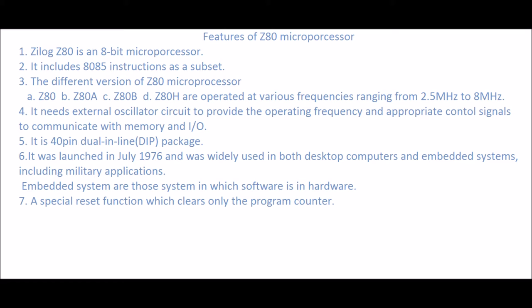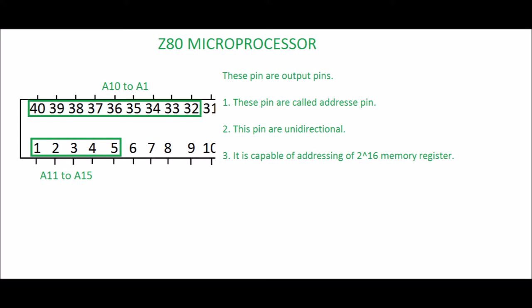A special reset function which clears only the program counter. Pins 1 to 5 (A11 to A15) and pins 31 to 40 (A1 to A10) are output pins called address pins. These are used to carry the address of memory registers and I/O input-output devices. These pins are unidirectional, as address always flows in one direction from the microprocessor to memory or to input-output devices.